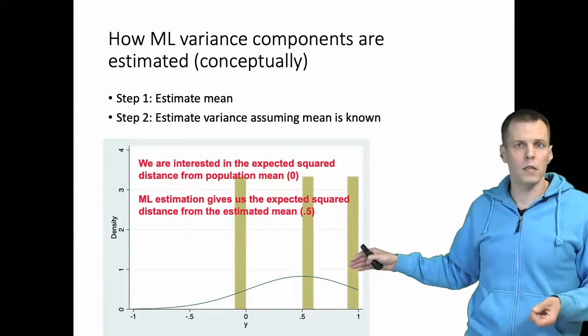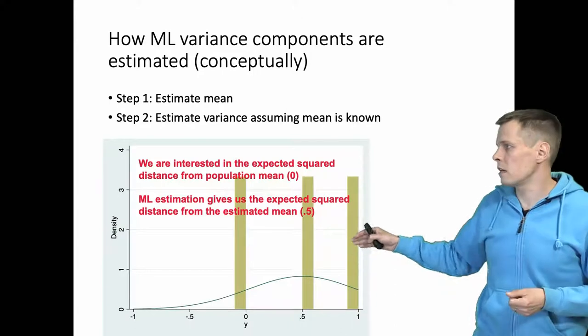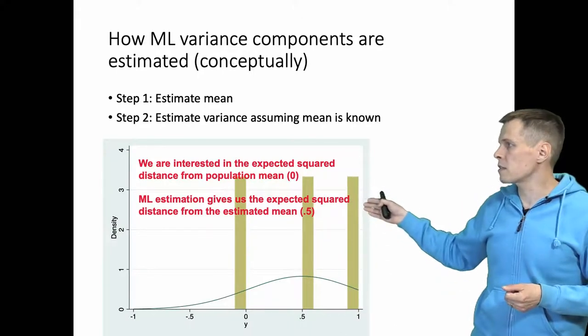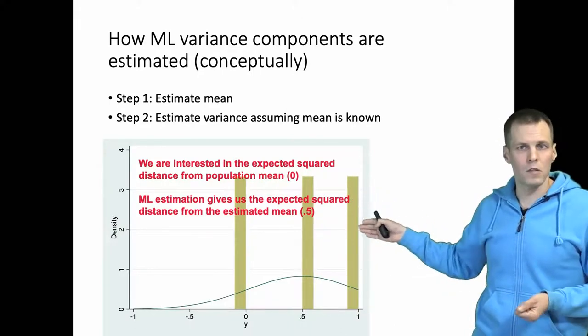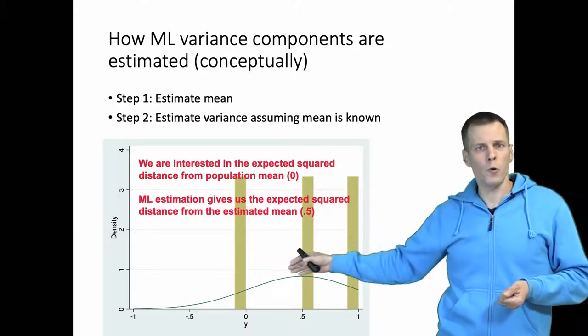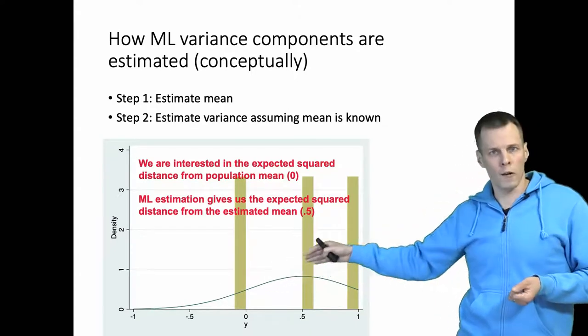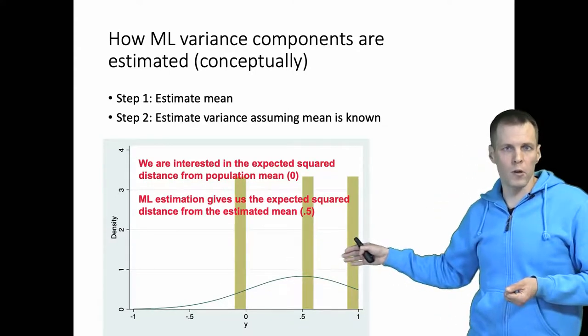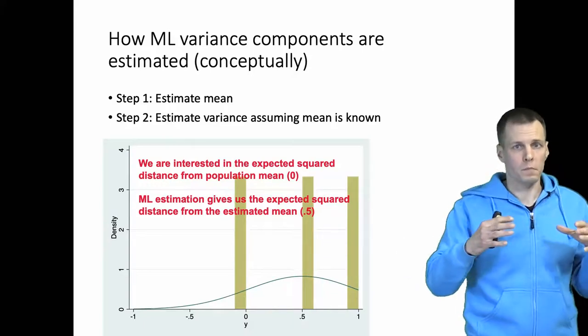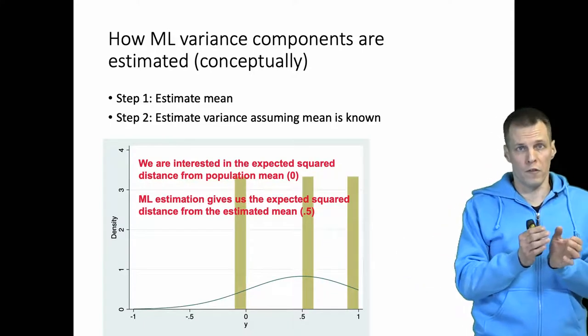What maximum likelihood estimation gives us instead is the expected square distance from the estimated mean. So it kind of pulls the distribution toward the observations before estimating how far those observations are spread out.